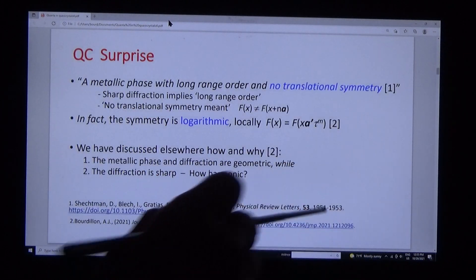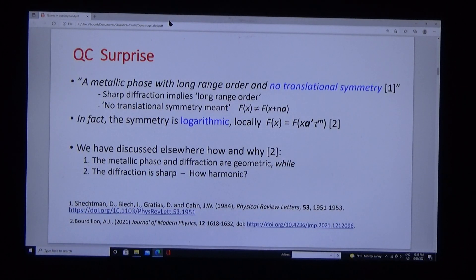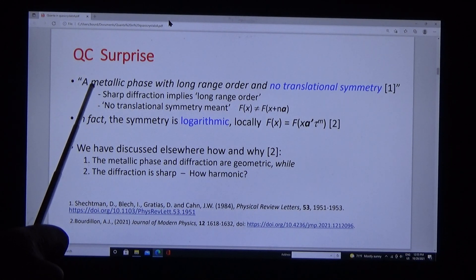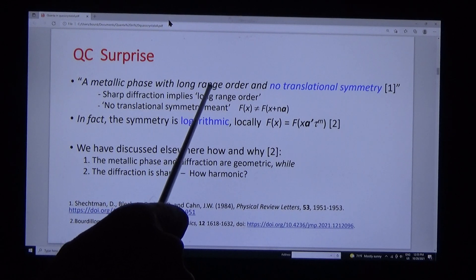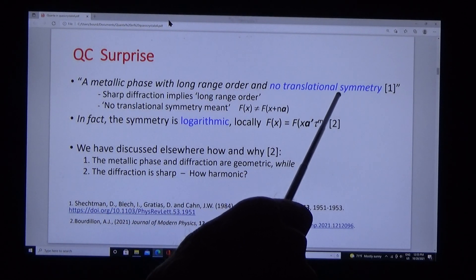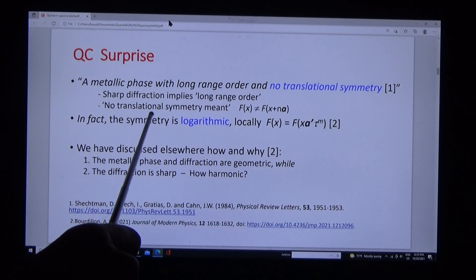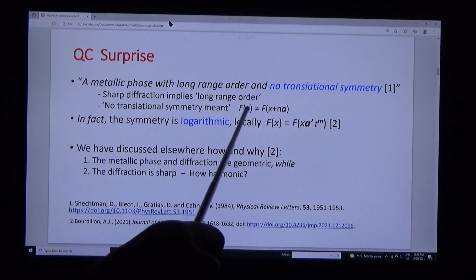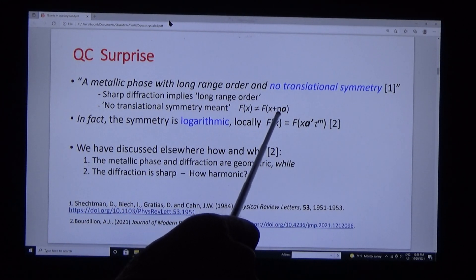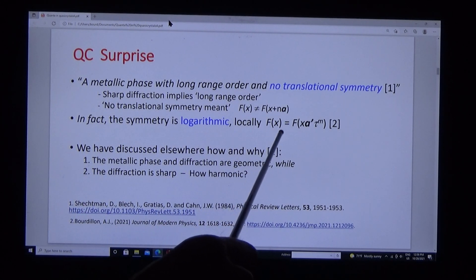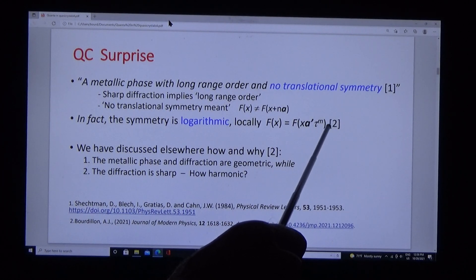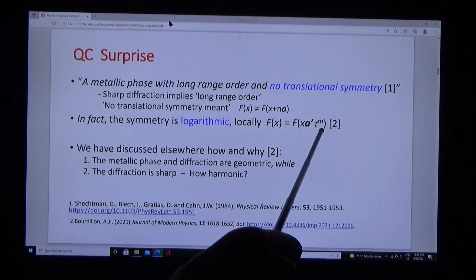We go on and consider the symmetry. The original discovery was a surprise: a metallic phase with long-range order and no translational symmetry. By no translational symmetry, they meant f(x) is not equal to f(x + na), contrary to crystals. In fact, the symmetry is logarithmic: f(x) equals x times a times tau to the power m—it's geometric.